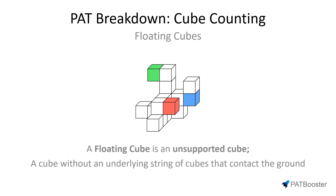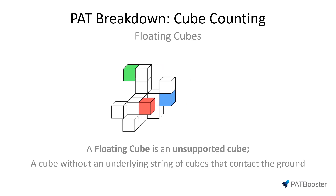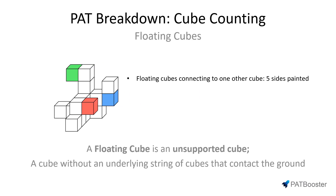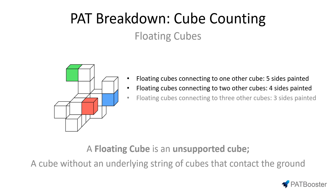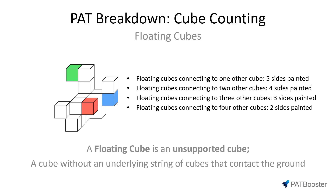As a rule: floating cubes connecting to one other cube will have five sides painted; floating cubes connecting to two other cubes will have four sides painted; floating cubes connecting to three other cubes will have three sides painted; and floating cubes connecting to four other cubes will have two sides painted. You should start to see the trend here.